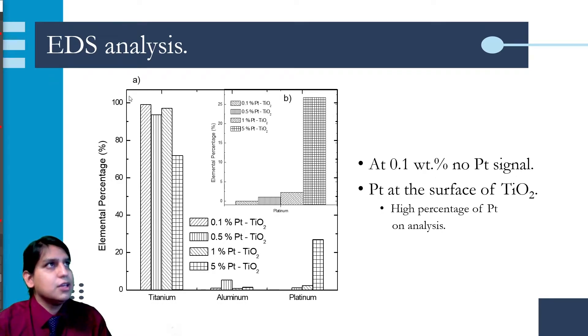In the EDS analysis, we can observe that at 0.1 weight percentage, there is no appreciable platinum signal, while at the other samples, there is high percentage of platinum analysis. This suggests that the platinum is deposited on the surface of the titanium dioxide, which is in good agreement with the SEM analysis.